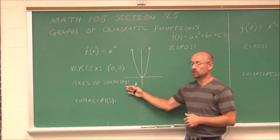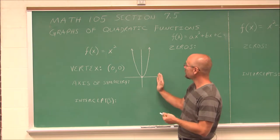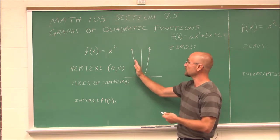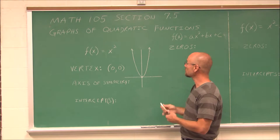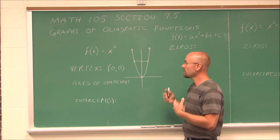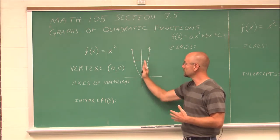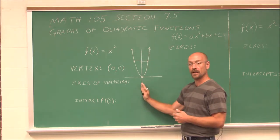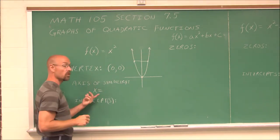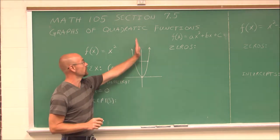Every parabola also has an axis of symmetry. If we assess what's happening here, because it's centered on the y-axis, anything to the right is reflected to anything to the left — that's symmetry. Any point on one side is the same distance as the corresponding point on the other side. The axis of symmetry is a vertical line; for this particular parabola it is x equals 0, which is the y-axis.